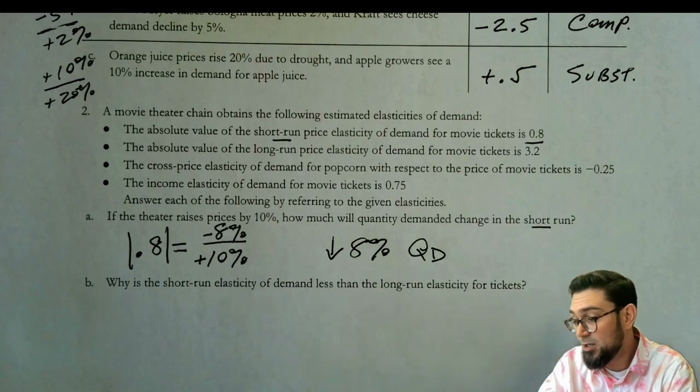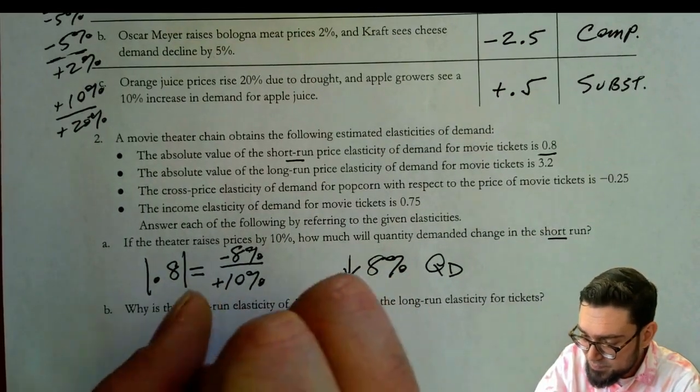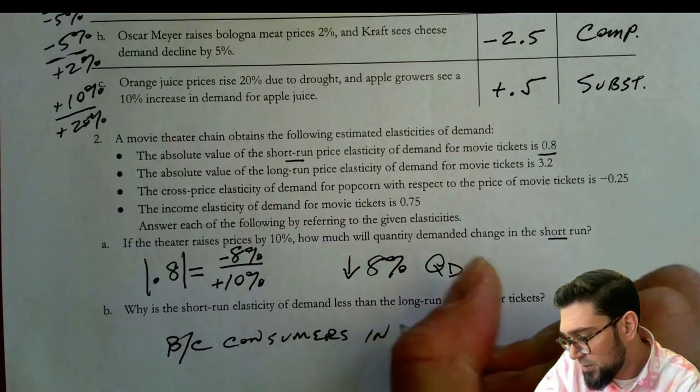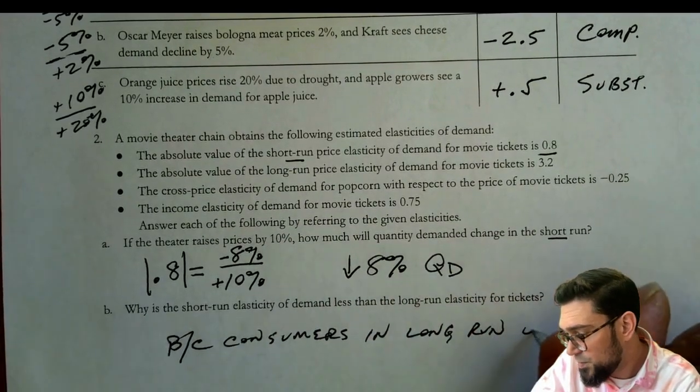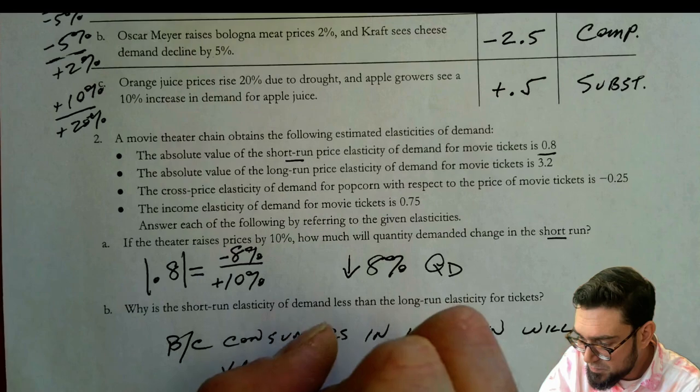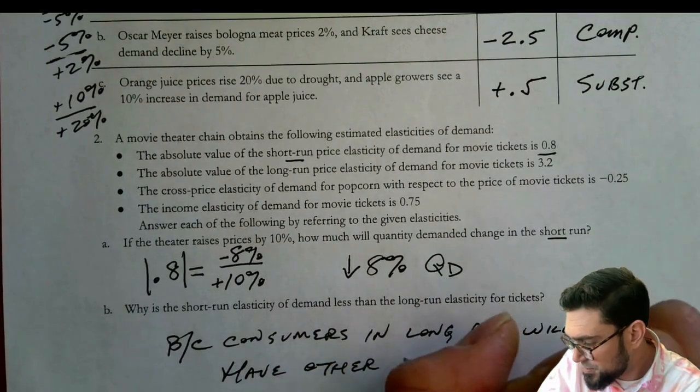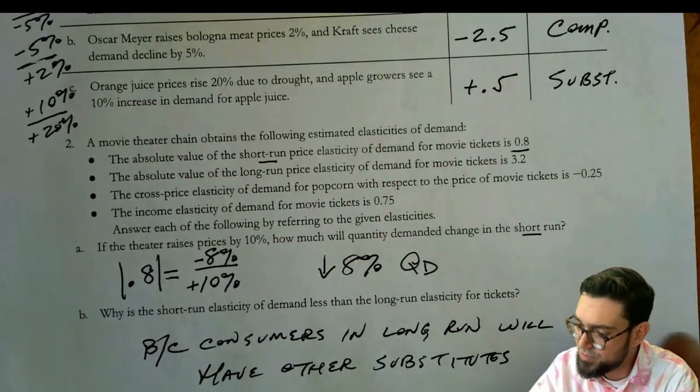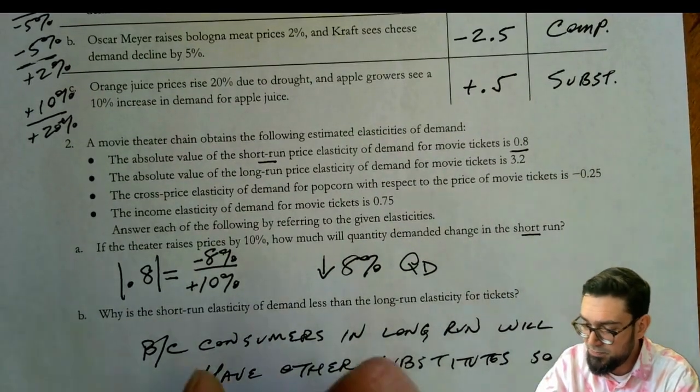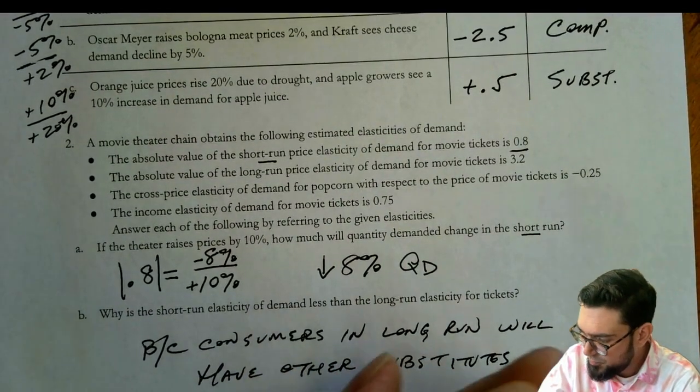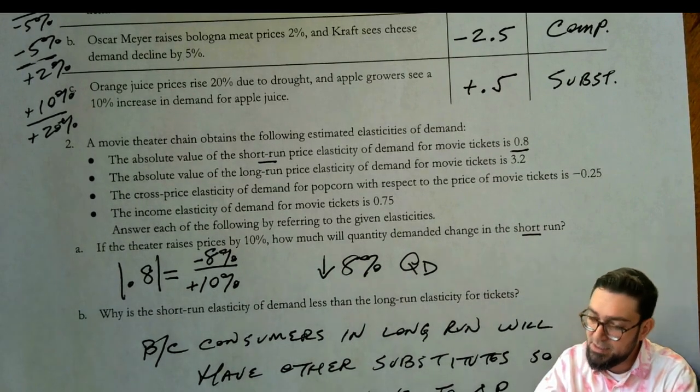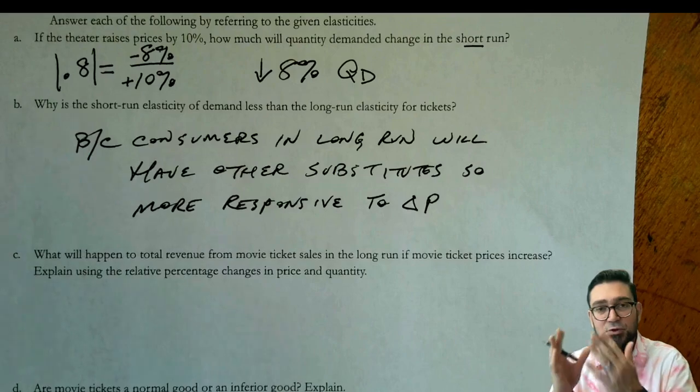Part B, why is the short run elasticity of demand less than long run elasticity for tickets? And we can say that because consumers in the long run will have other substitutes, and so more responsive to the change in price. They'll be more responsive to the change in price.